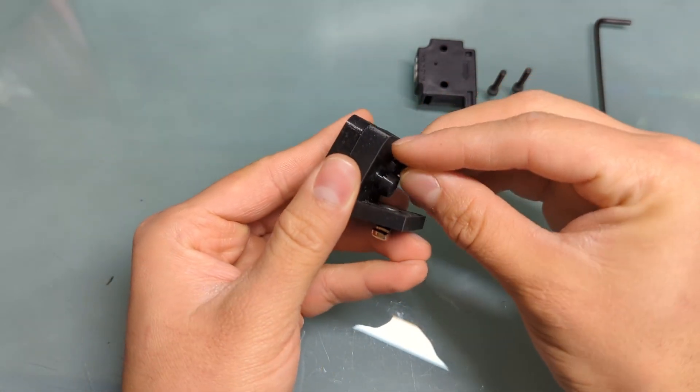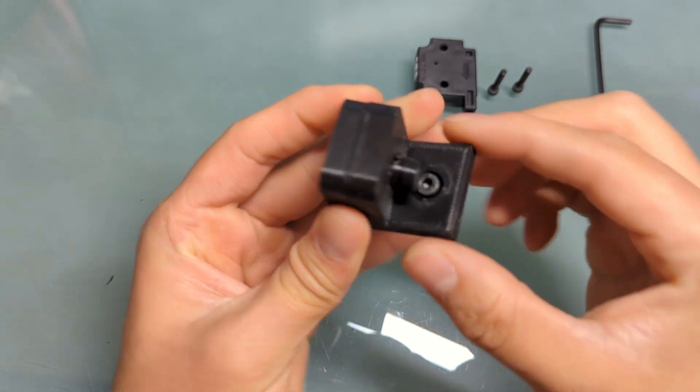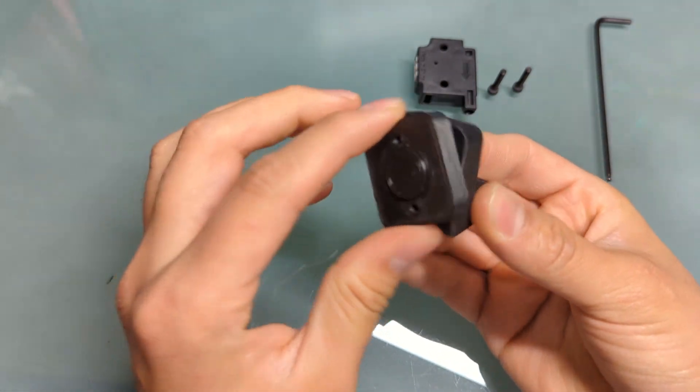Then grab your locking clip, put it through the screw. Okay, and that's it.